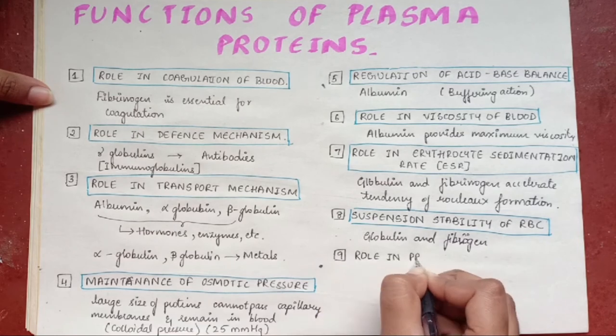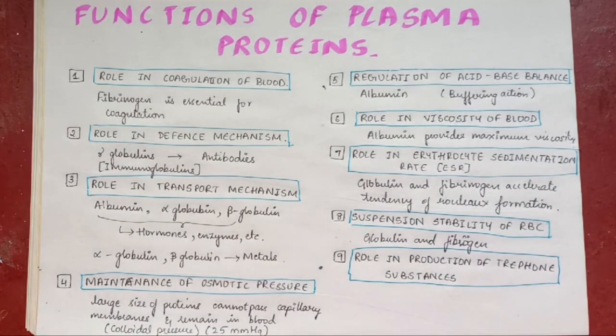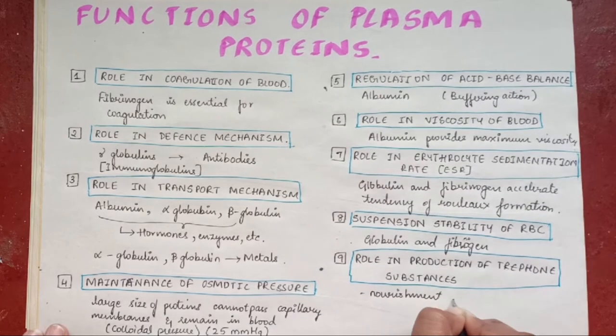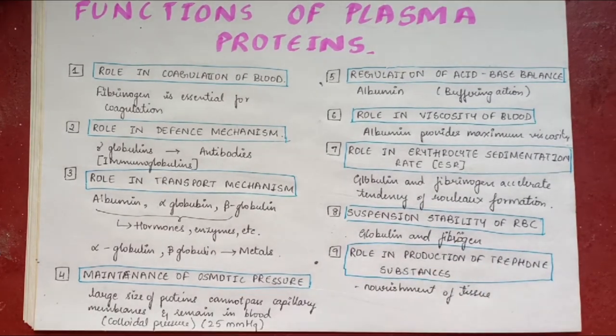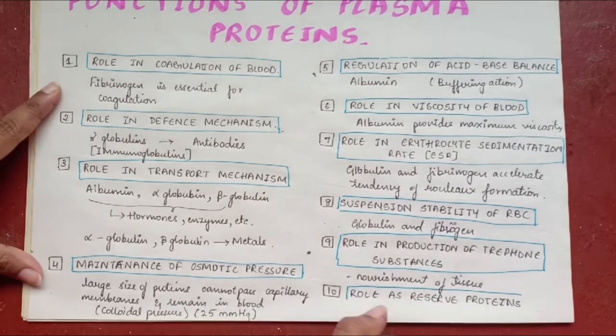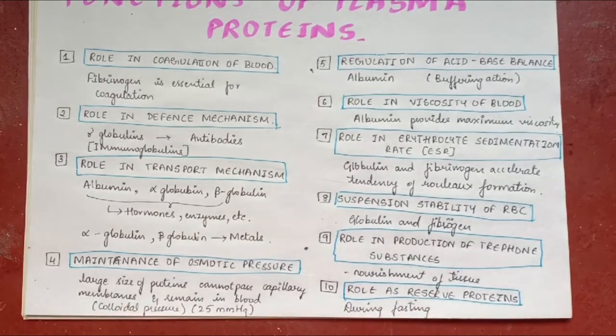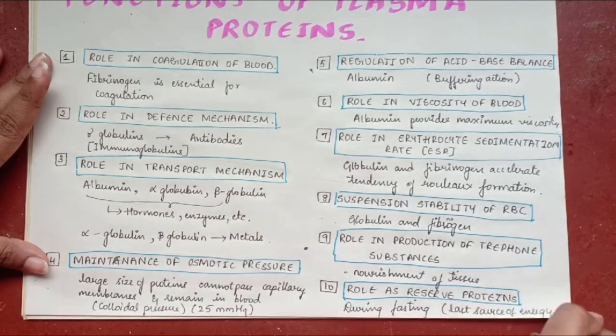Role in production of trifone substances. Trifone substances are necessary for the nourishment of tissue cells in culture. Role as reserve proteins. During fasting, inadequate food intake or inadequate protein intake, the plasma proteins are utilized by the body tissues as the last source of energy.